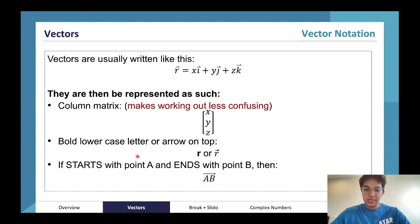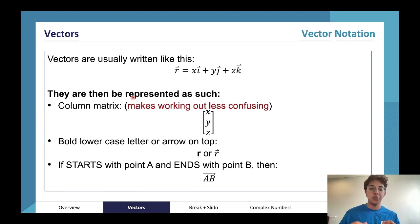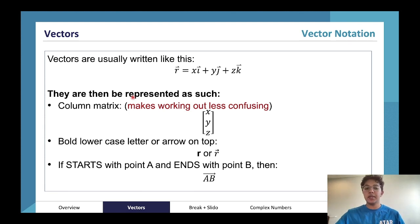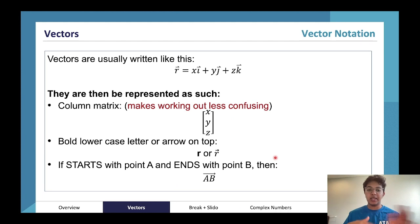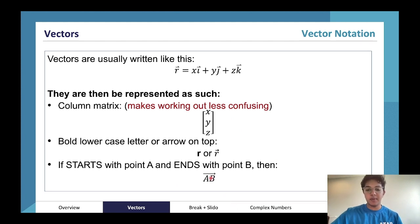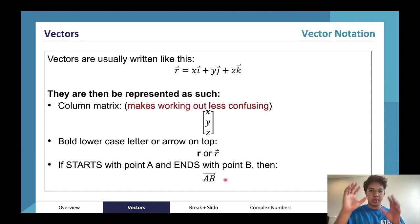Whenever a vector starts and ends at certain points, we can label those points in capitals with an arrow above them. In this example, it's starting at A and ending at B — so we write A to B. The tail of the arrow is at A and the head is at B, so it's going from A to B.